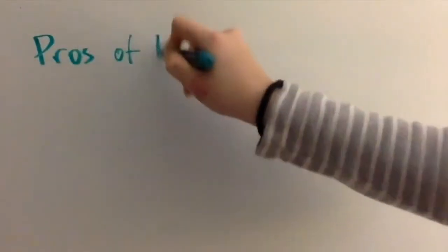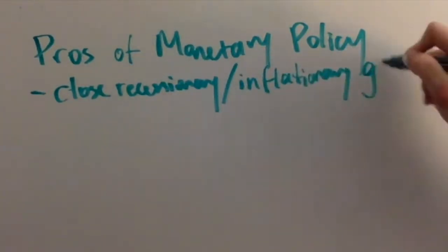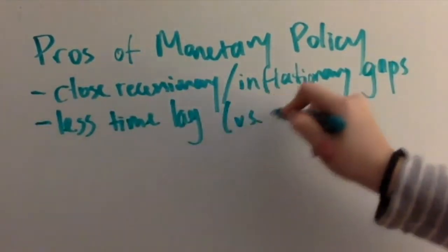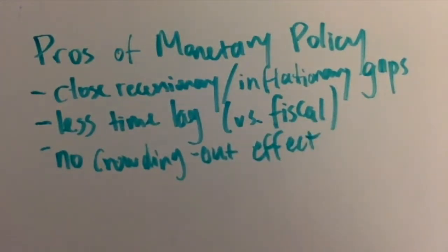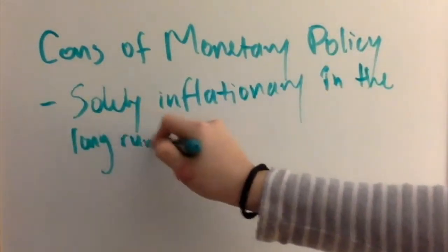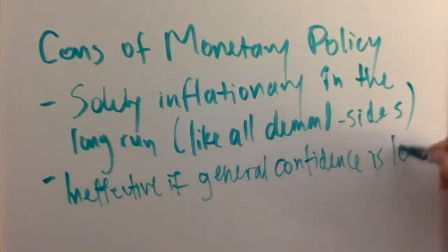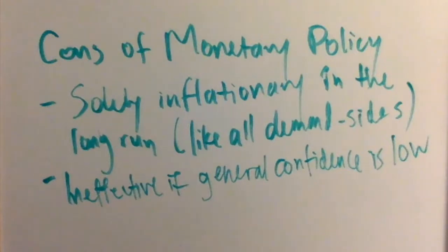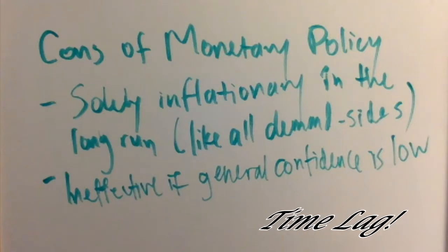Now let's evaluate monetary policy. Like fiscal policy, monetary policy is great when closing recessionary and inflationary gaps, and when fighting demand-deficient unemployment. It also has much less of a time lag than fiscal policies, and allows for AD to be fine-tuned. Furthermore, because we're adjusting the money supply, crowding out consumption and investment isn't a problem. However, expansionary monetary policy will not increase the long-run aggregate supply curve, because it isn't investing in anything. Monetary policy can also prove to be ineffective when the general confidence level is low — people don't want to spend no matter how low you make the interest rates. You also run a high risk of loan default during times such as a recession. And even though it has less of a time lag, there is still a time lag. But like fiscal policy, its major problem is that it may be solely inflationary in the long run.